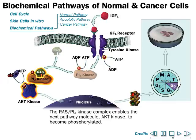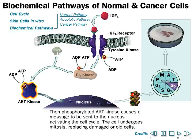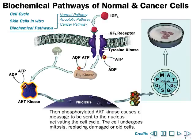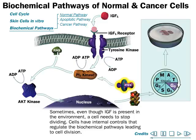Ras together with PI3 kinase then phosphorylates AKT kinase. When AKT kinase is phosphorylated, it sends a message to the nucleus activating the cell cycle, and the cell undergoes mitosis, replacing damaged or old cells. This is how the overall signal transduction pathway proceeds through the G1, S, G2, and M phases, producing two new cells from one in the mitotic cell cycle.